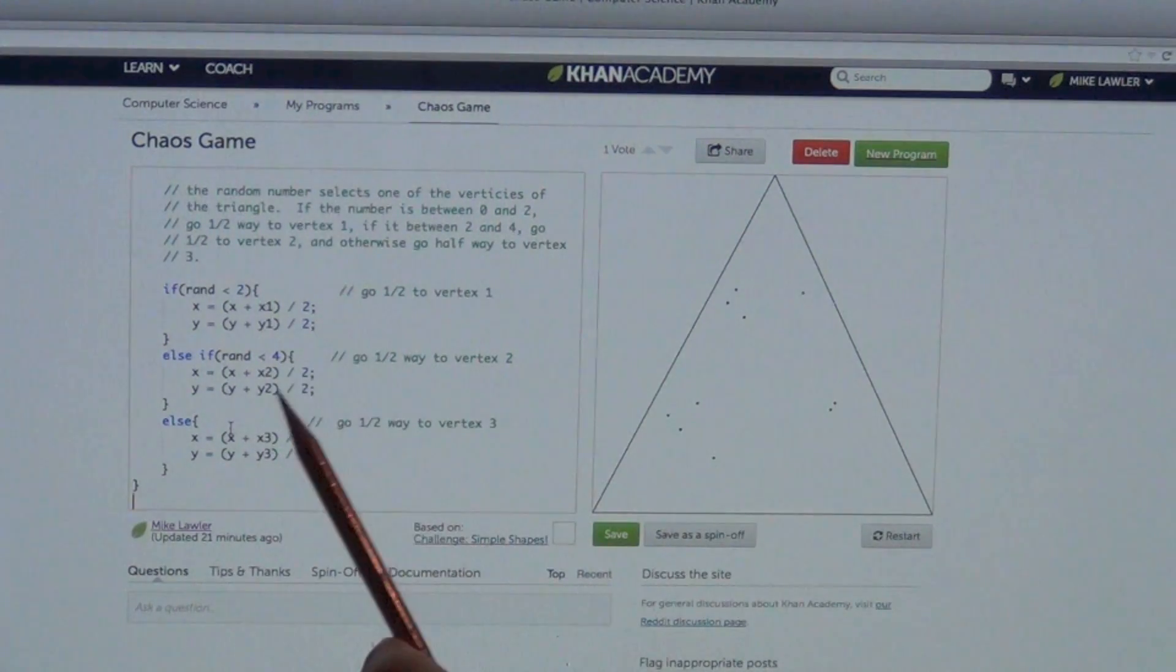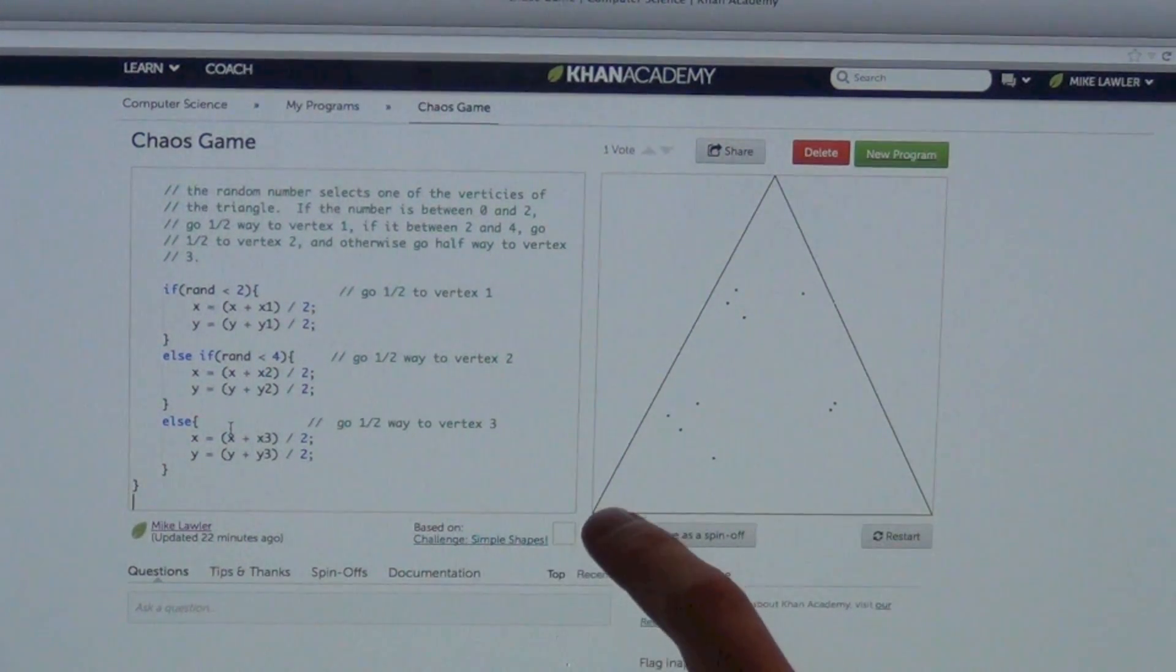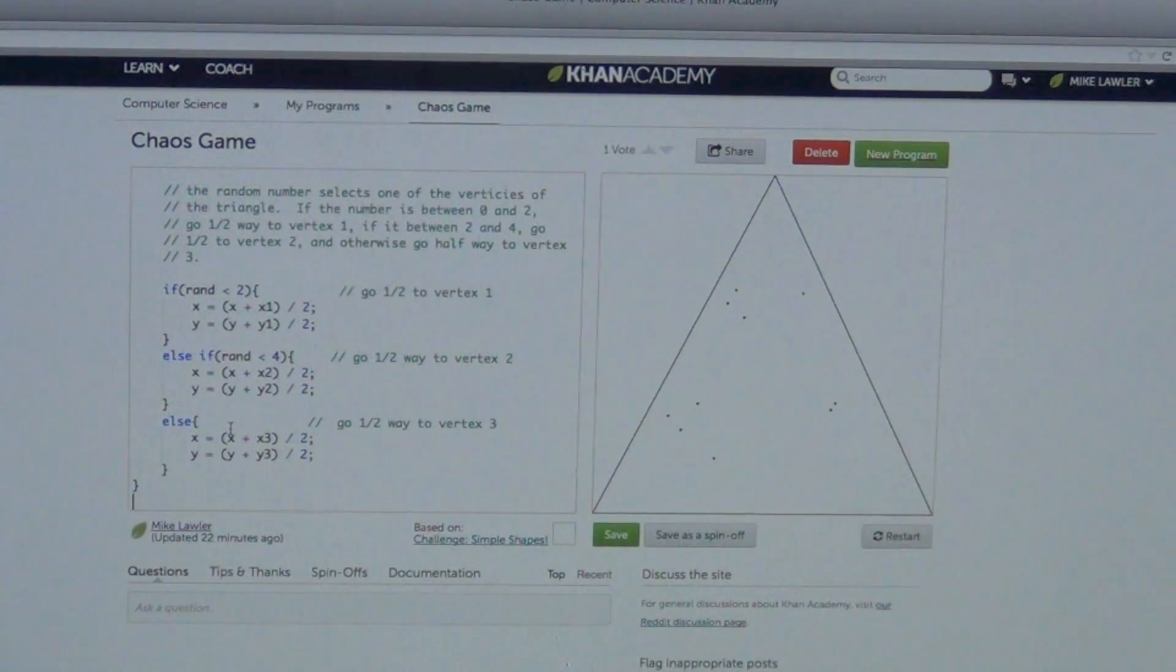If it's between 2 and 4, I go halfway to this vertex. And if it's between 4 and 6, I go halfway to this vertex. So it's basically like rolling a dice and if I get 1 or 2, I go halfway to the first vertex. 3 or 4, I go halfway to this vertex. 5 or 6, I go halfway to this vertex. Got it? Make sense? Okay, and then we just kind of loop around and I get this picture.